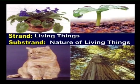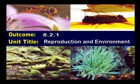Our last lesson — once again, our last lesson for the strength sub-strength learning outcome — the unit title we have been on for the last two to three weeks, ending all that. We are still on the strength: living things, sub-strength nature of living things, outcome 8.2.1, and unit title reproduction and environment. Teachers, this is a reminder that you are supposed to prepare a unit test on living things, and especially reproduction and environment. Everything that has been covered, you try to have a unit test set for your students to do.